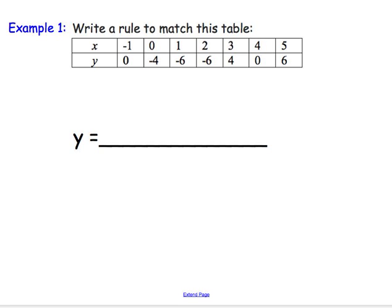Let's take a look at this first example. We're going to write a rule to match this table. Here's what we want to remember: the intercepts, the zeros, are your friend. Because when we solve for intercepts, and I'm talking about x-intercepts...